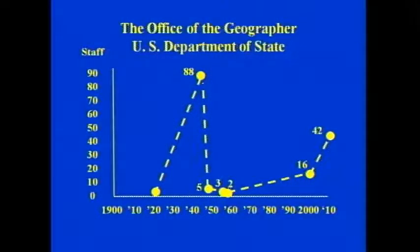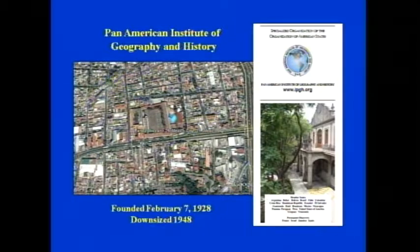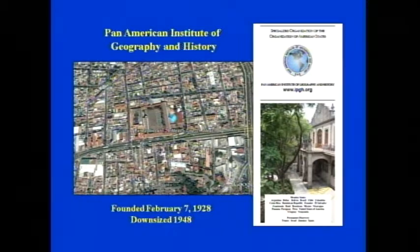This was not just in academia. The staff of the Office of Geography at the State Department went from zero in 1920 up to 88 people by the close of World War II, but then immediately dropped to five people, three people, two people. It has gradually been coming back up to about half its maximum. It didn't just happen in the United States — it happened in the Americas. The Pan American Institute of Geography and History in Mexico City, built in the 1920s, was similarly downsized, and the year was also 1948.